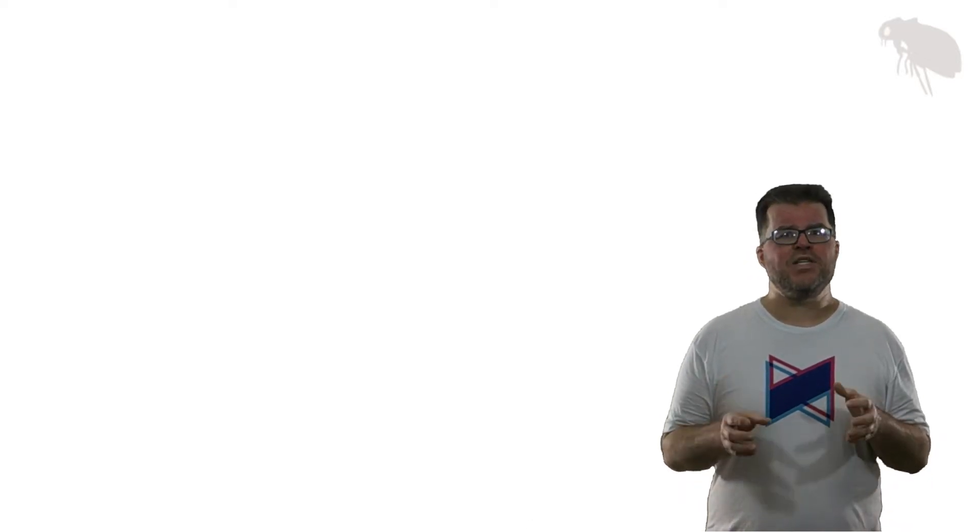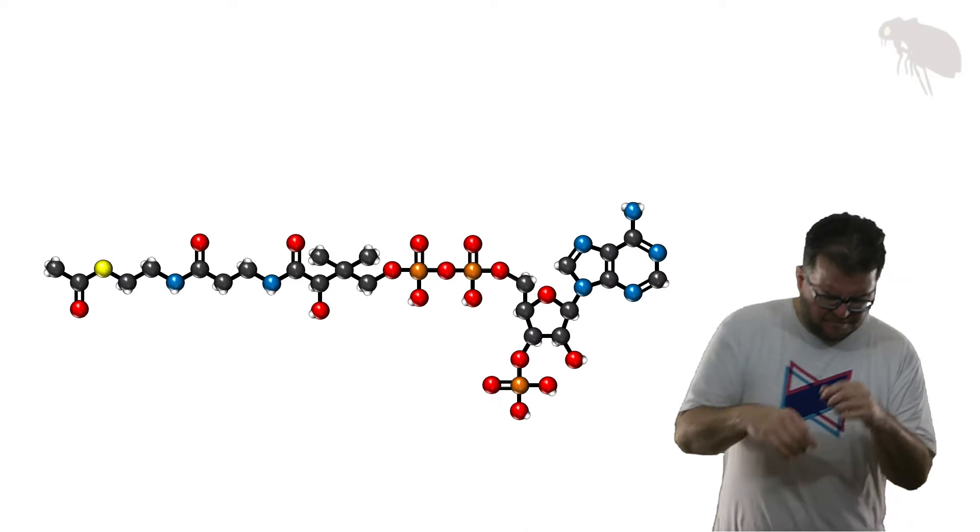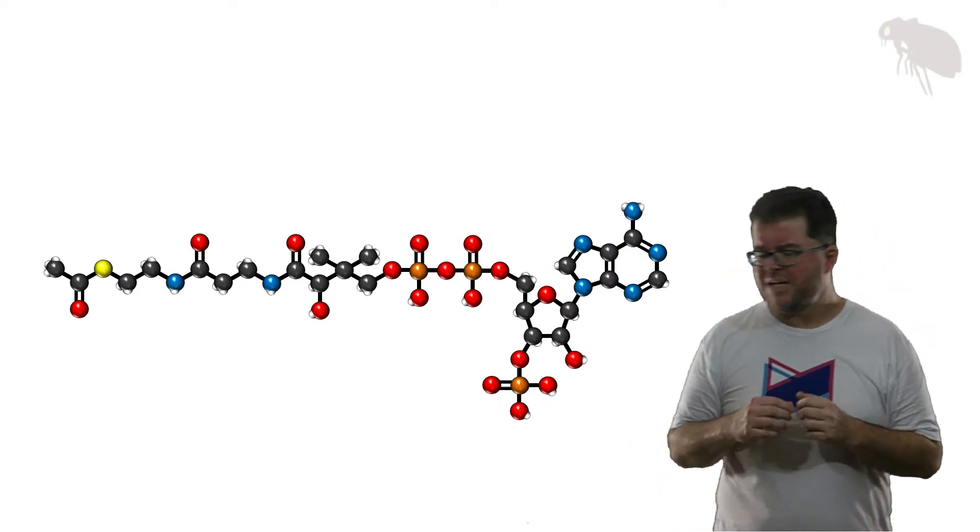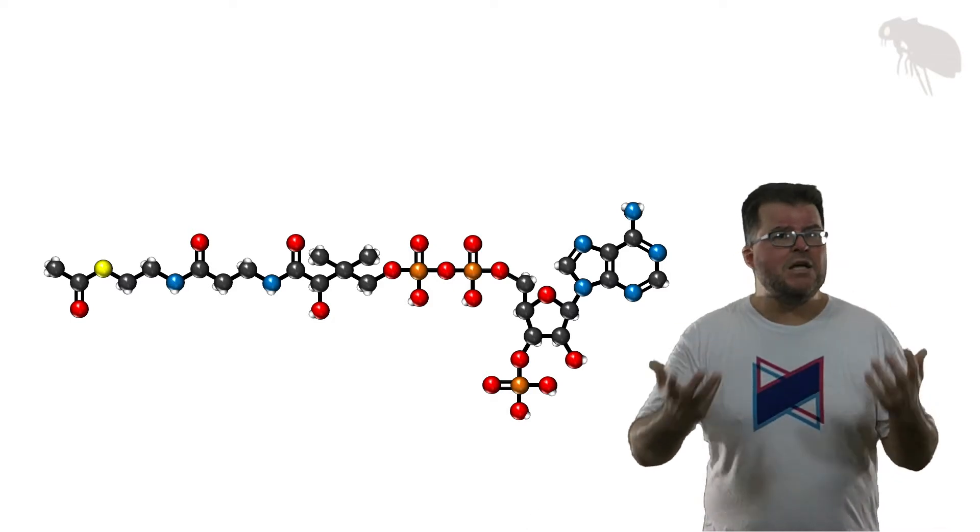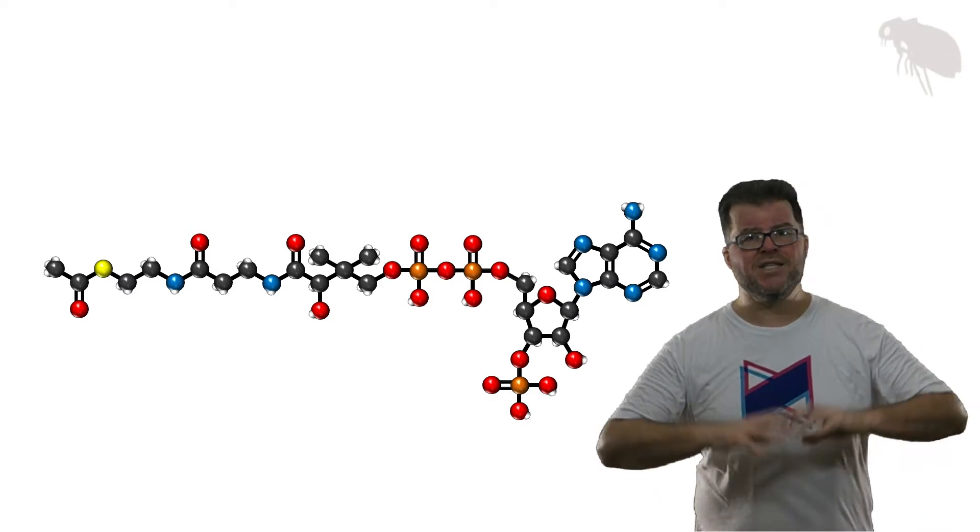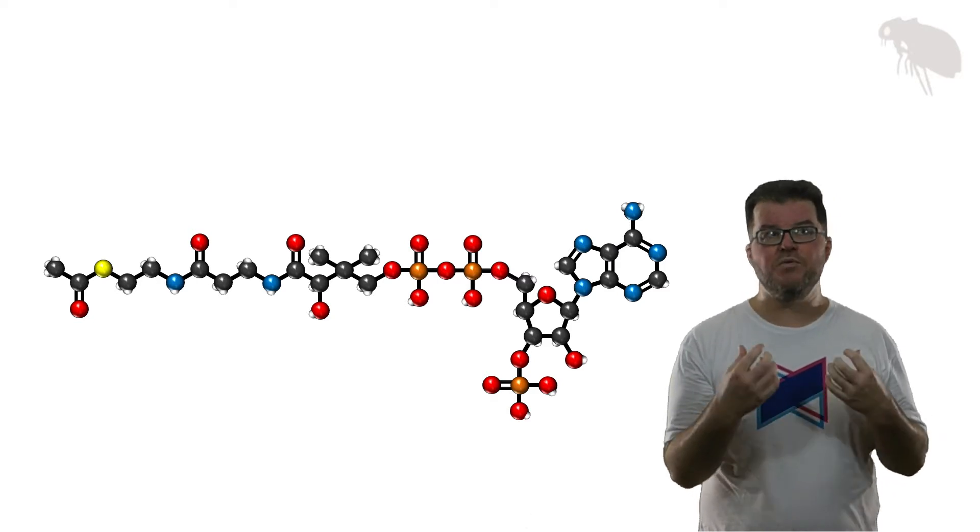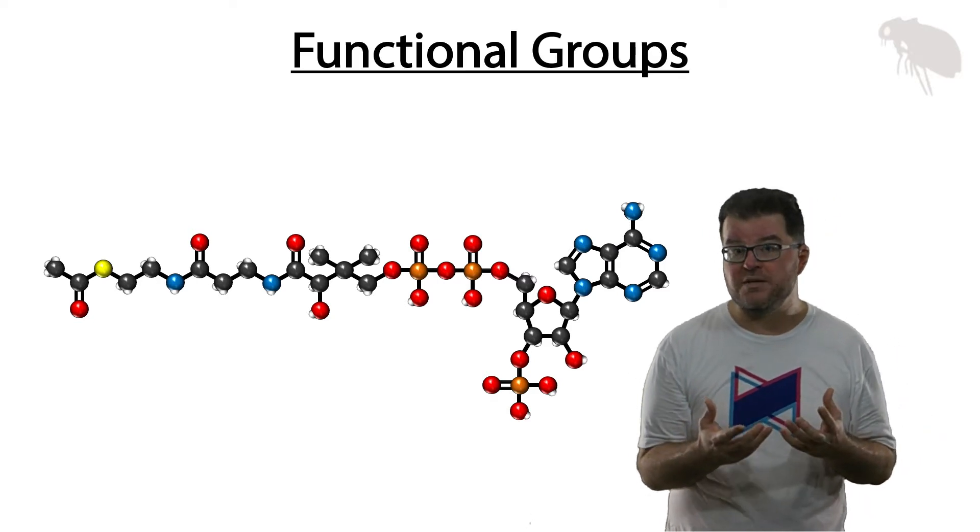You need to know a little bit about them. If you've ever looked at an organic molecule like acetyl coenzyme A here, they're big, right? They're called macromolecules for a reason. There's a lot going on, and if you want to be able to look at one of these molecules and understand it, you need to have this idea of functional groups in mind.